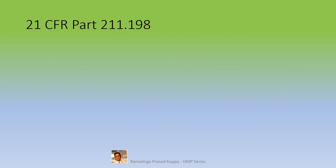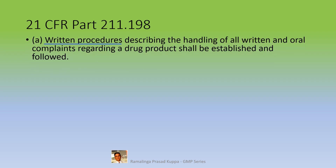21 CFR Part 211.198: Written procedures describing the handling of all written and oral complaints regarding a drug product shall be established and followed. As a basic GMP requirement, it is necessary to have a detailed written procedure for handling any complaints from the market on the quality of the product. Some customers may not communicate through a written complaint note — it may be informed verbally over the phone. So, any complaints, oral or written, should be logged in.